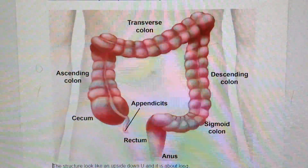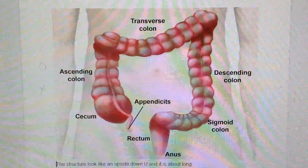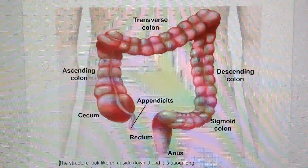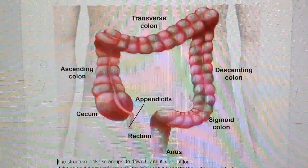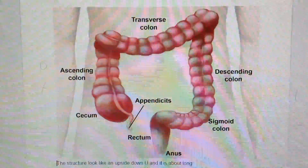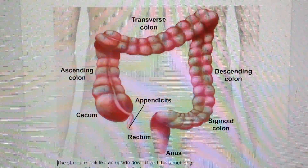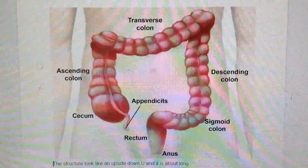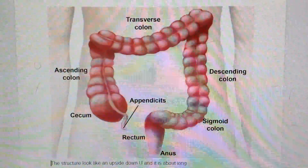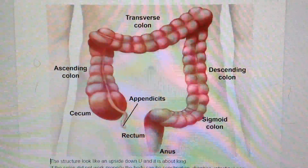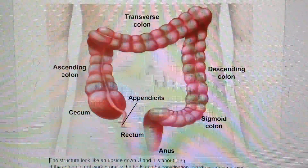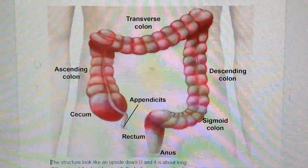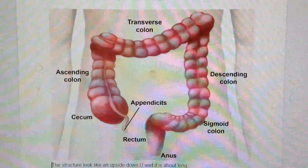The colon or large intestine represents the final part of the digestive system and receives food material from the small intestine and absorbs nutrients, absorbs water, absorbs vitamins and recycles them back to our body. After 12 to 30 hours, the material and waste get ready to leave the human body.